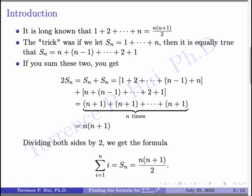Let's start with a very well-known formula, which is when you add 1 plus 2 plus 3 all the way to n, where n is some fixed positive integer, the answer is n times n plus 1 over 2. Now how do you do that? It turns out you can use a simple trick. The answer is going to be a function of n, but let's say I don't know what that formula is.